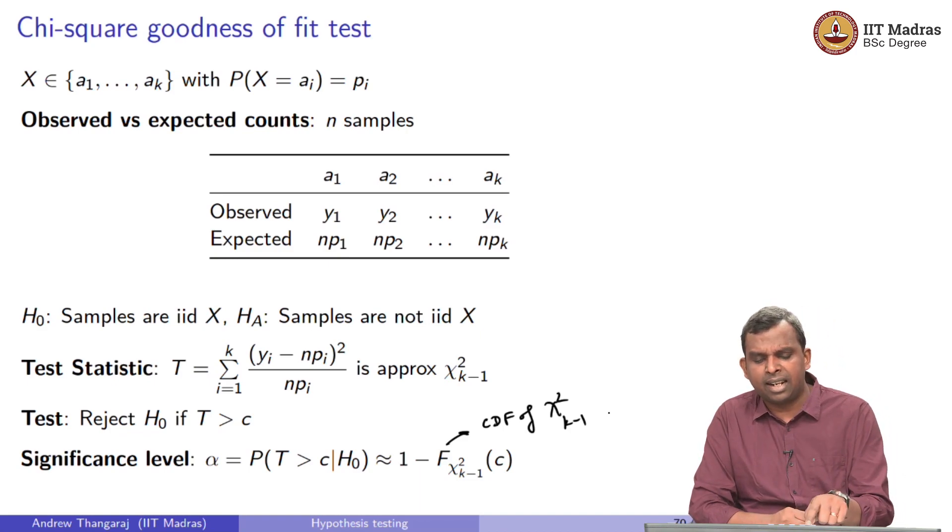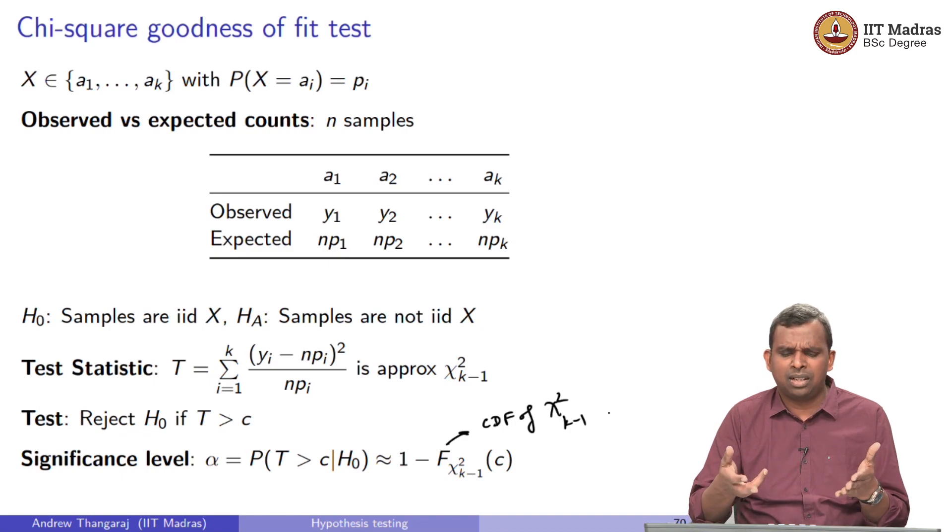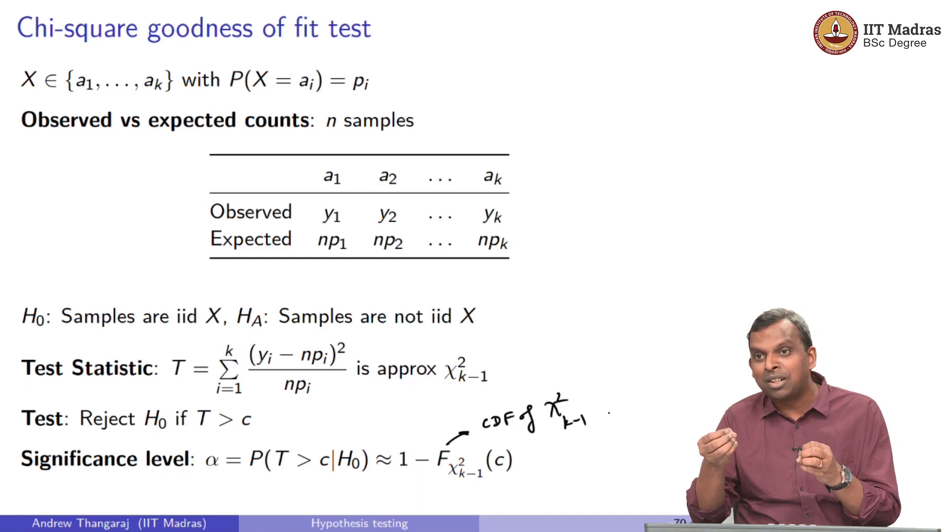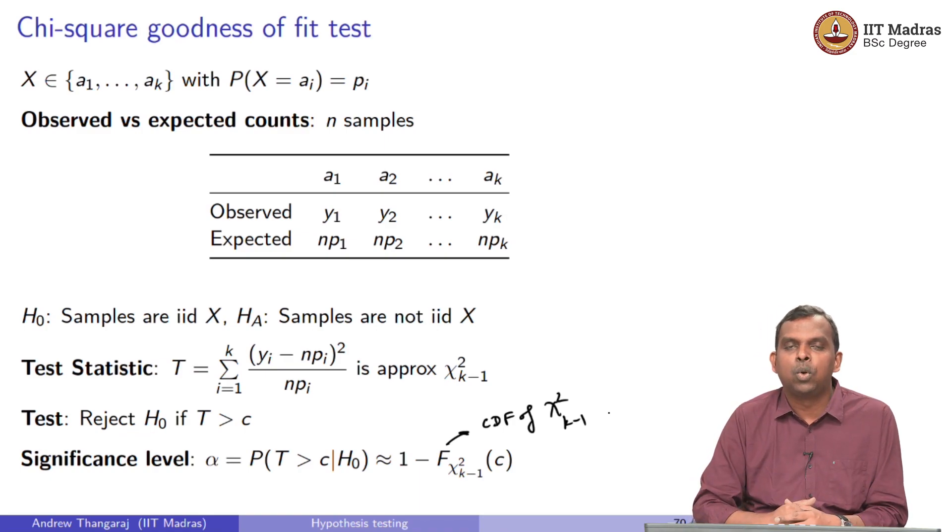Notice the test statistic again, we have not seen any proof for why this is chi-squared k minus 1. It is a little bit advanced, uses some linear algebra ideas. I will leave you to look it up if you are interested, but this is an important result. Once again, you see why these things are important: probability, linear algebra, all of these things form the basis of most such results. Of course, you can use the goodness of fit test without understanding the proof, but in some other situation when it fails, you would not know why it failed. Only when you know the proof will you know maybe this approximation did not work in this case. You can go and look at it if you are interested. That is chi-squared goodness of fit test.